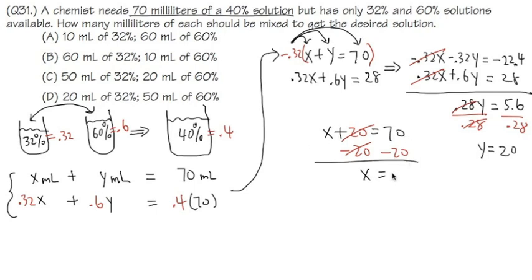But you have to answer the question carefully. x is the amount in milliliters for the 32% solution, so that's 50 mL of 32%. y is for the 60% solution, so that's 20 mL of 60%.